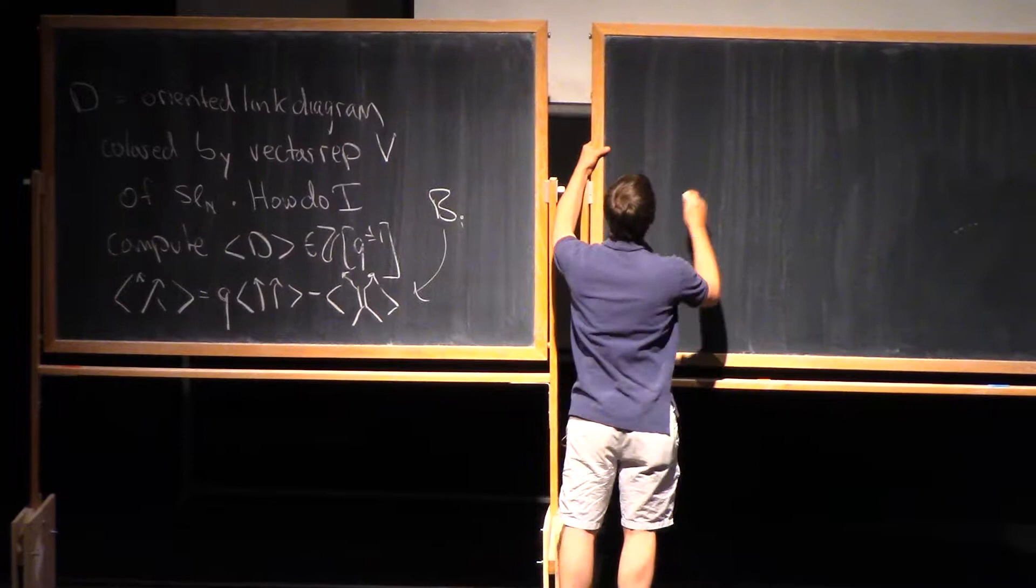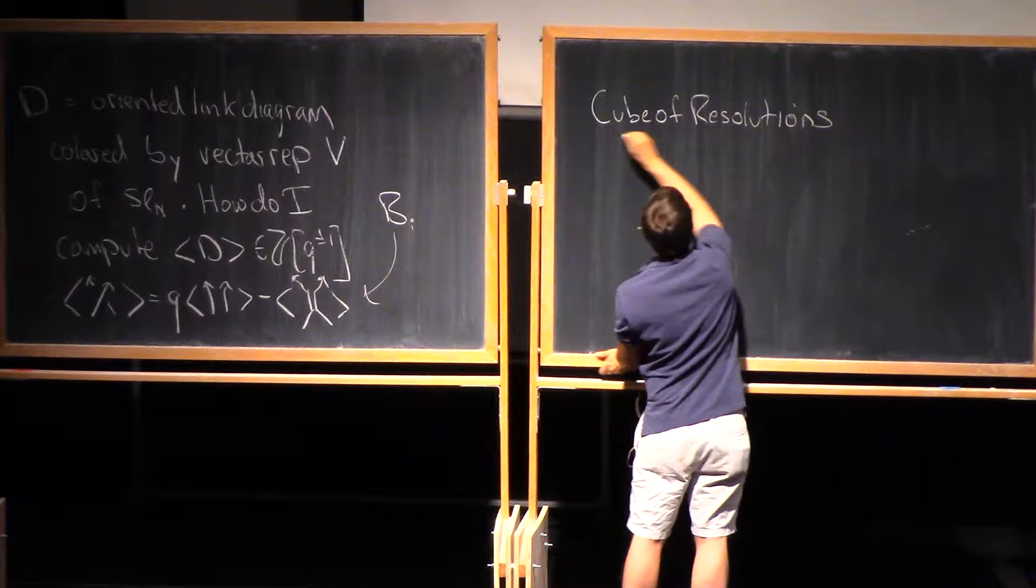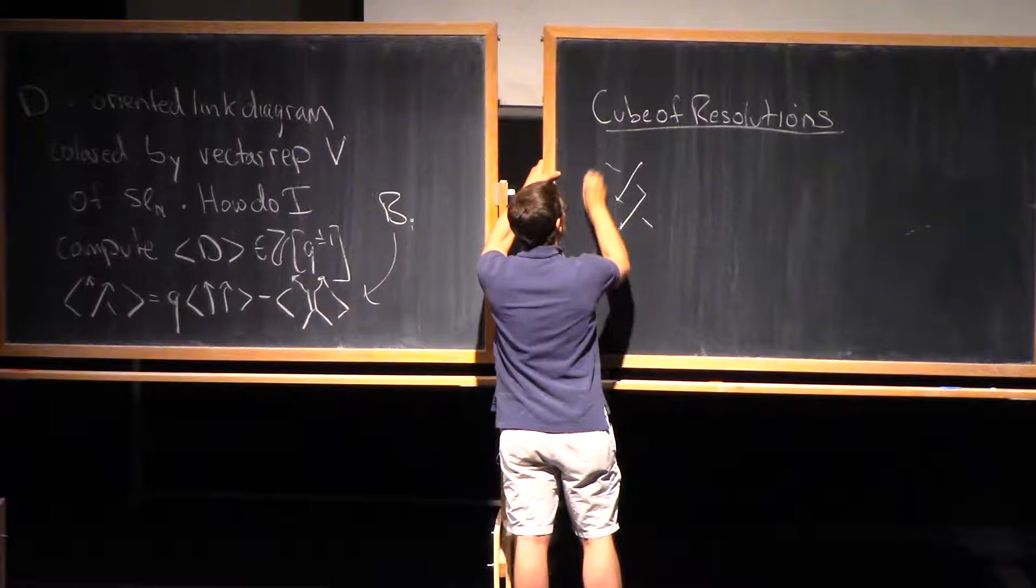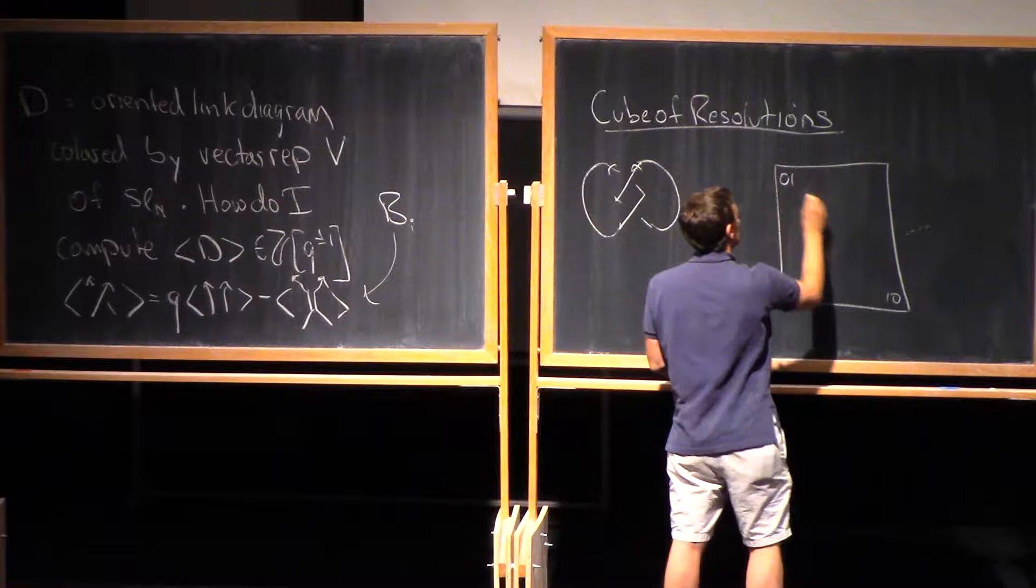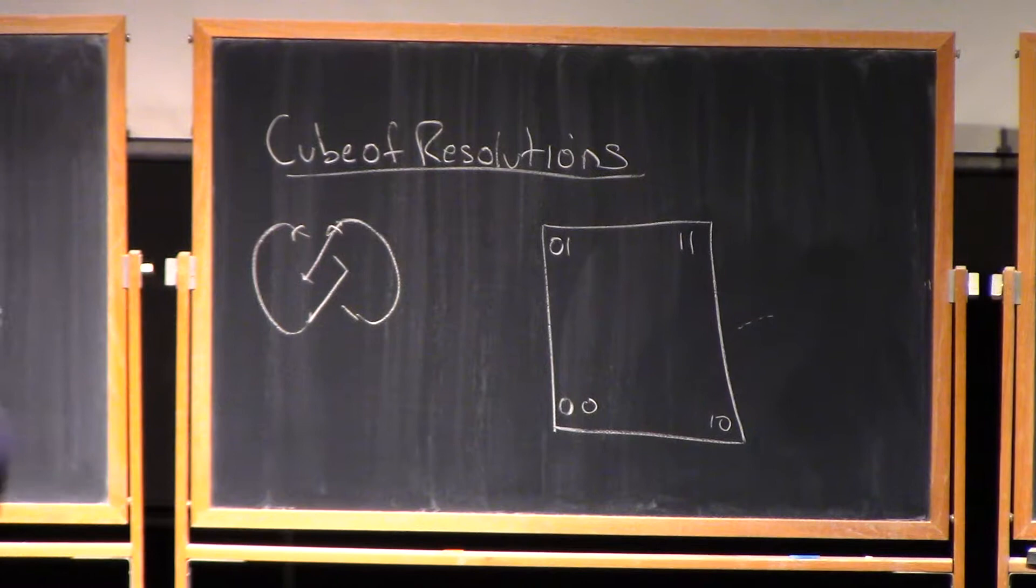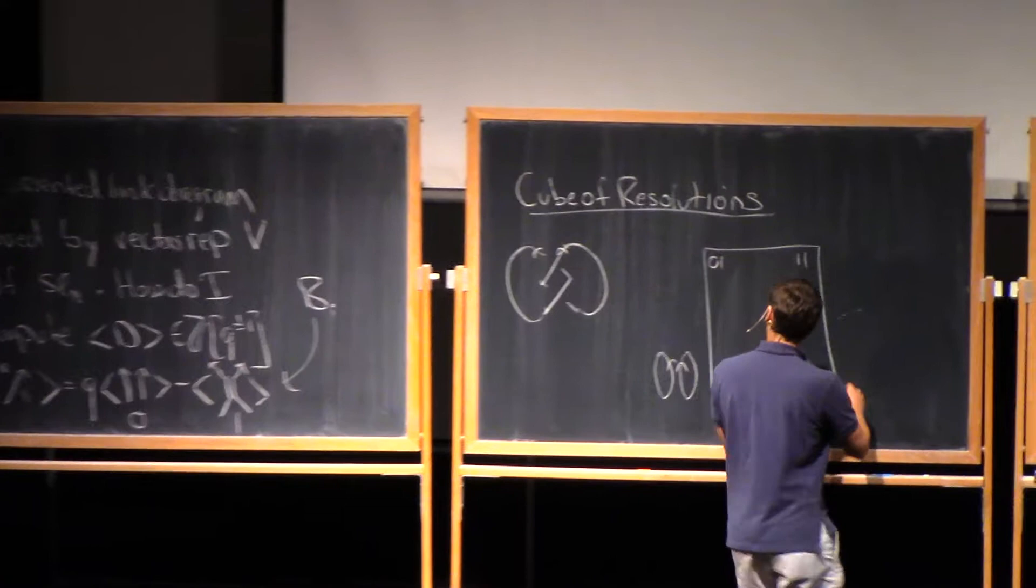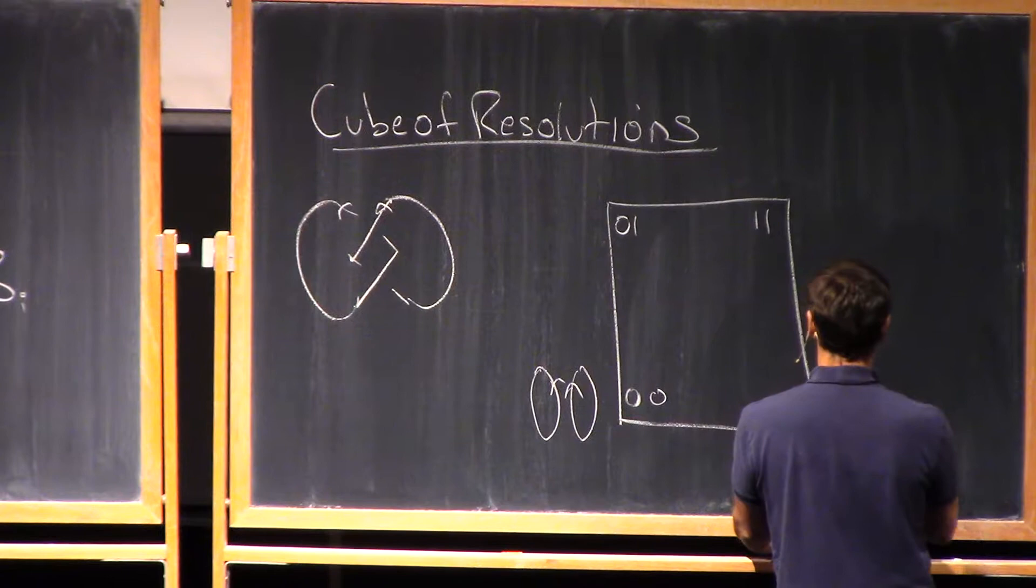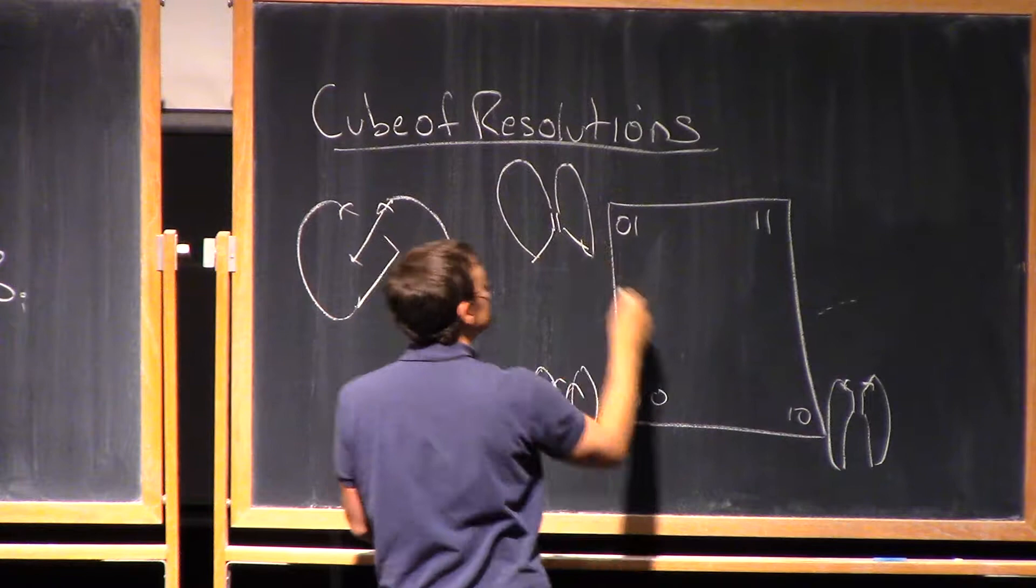So really what I'm doing here if I apply this relation is I'm forming a cube of resolutions. So maybe let's just imagine that our diagram D was a familiar diagram of a Hopf link. Then we've got two crossings and I'll have a cube of resolutions. So here I do the zero resolution to both things, in my notation the zero resolution and this is the one resolution. Here I have the same thing but with the thick edge on the downside and here I have two thick edges.